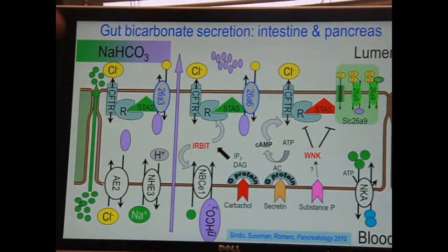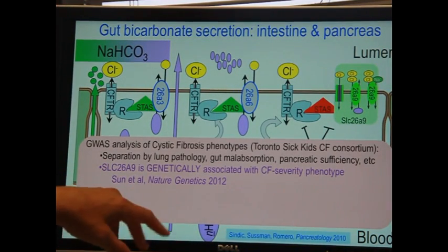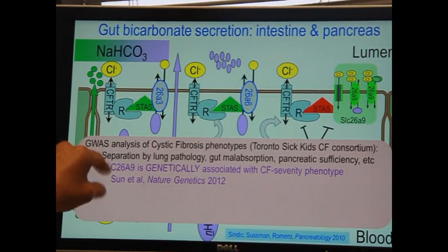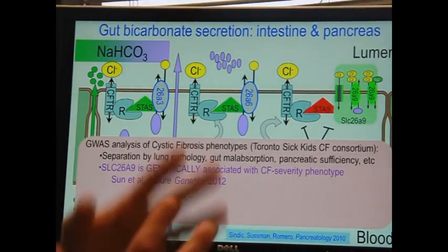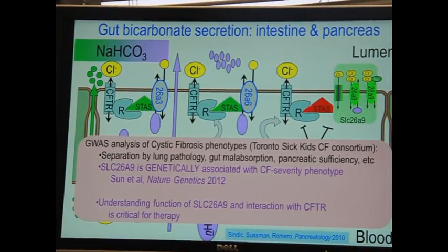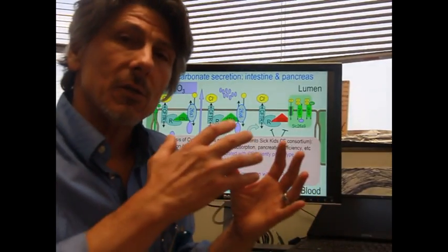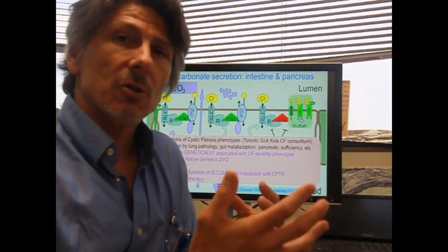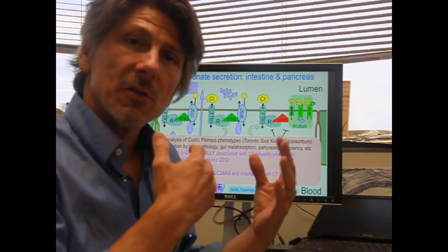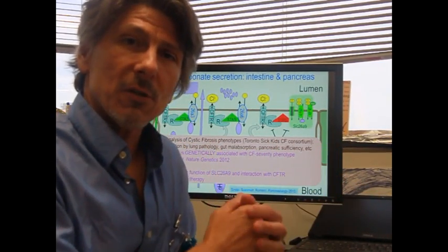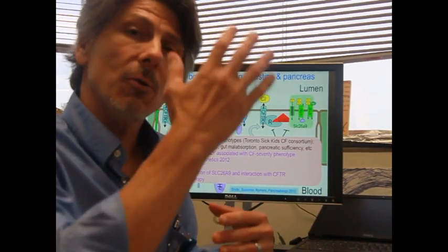And rather than activating function, it inhibits function. So what's even more interesting is there's a recent study, a GWAS study, that just came out from Sun et al. in Nature Genetics, that shows that this SLC26A9 gene is genetically associated with the gut phenotypes in cystic fibrosis. And so the really important factor of Dr. Anping Chen's findings is that not only is CFTR changing the function of the bicarbonate and chloride transport in the epithelia, but if you layer on top of that this chloride channel and transporter, SLC26A9, and the naturally occurring SNPs, you can either increase or decrease function.